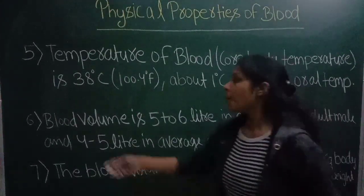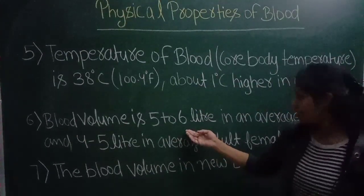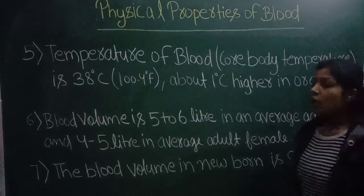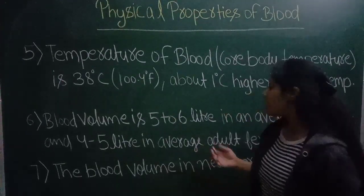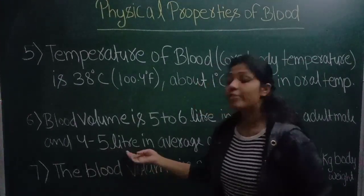Blood volume is 5 to 6 liters in an average adult male, whereas in an average adult female it is 4 to 5 liters.